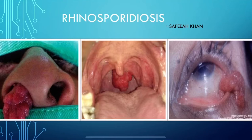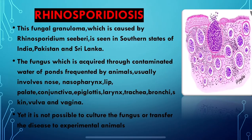Welcome back. In today's video, we are going to discuss rhinosporidiosis. Rhinosporidiosis is a fungal granuloma caused by the fungus Rhinosporidium seeberi. It is seen in the southern states of India, Pakistan and Sri Lanka.